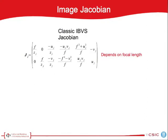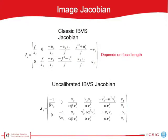Looking at the traditional image Jacobian, we can see how it strongly depends on the real focal length, and how the uncalibrated image Jacobian does not. For more detail on this formulation of the Jacobian, please check out the paper.